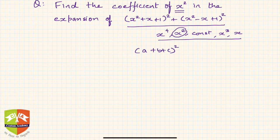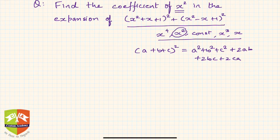Obviously we could expand using the identity (a+b+c)² = a² + b² + c² + 2ab + 2bc + 2ca, but that looks like too much work. So can we evade that and use some other method? Yes — even within algebraic identities there are smarter approaches.